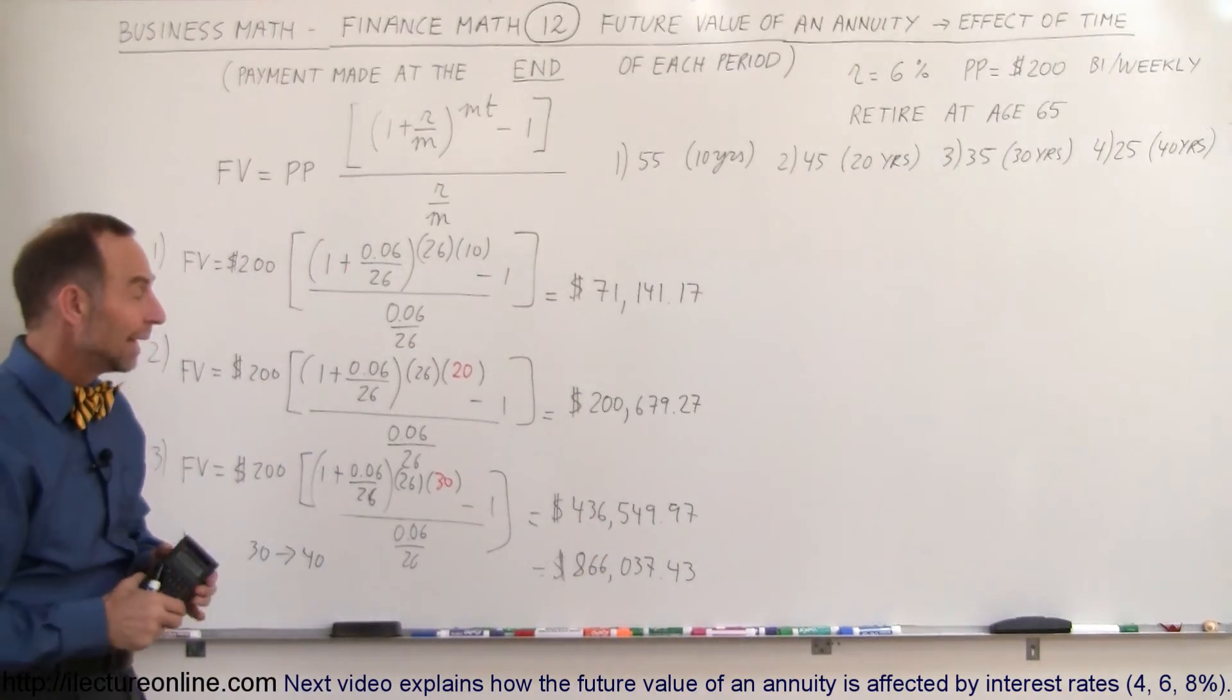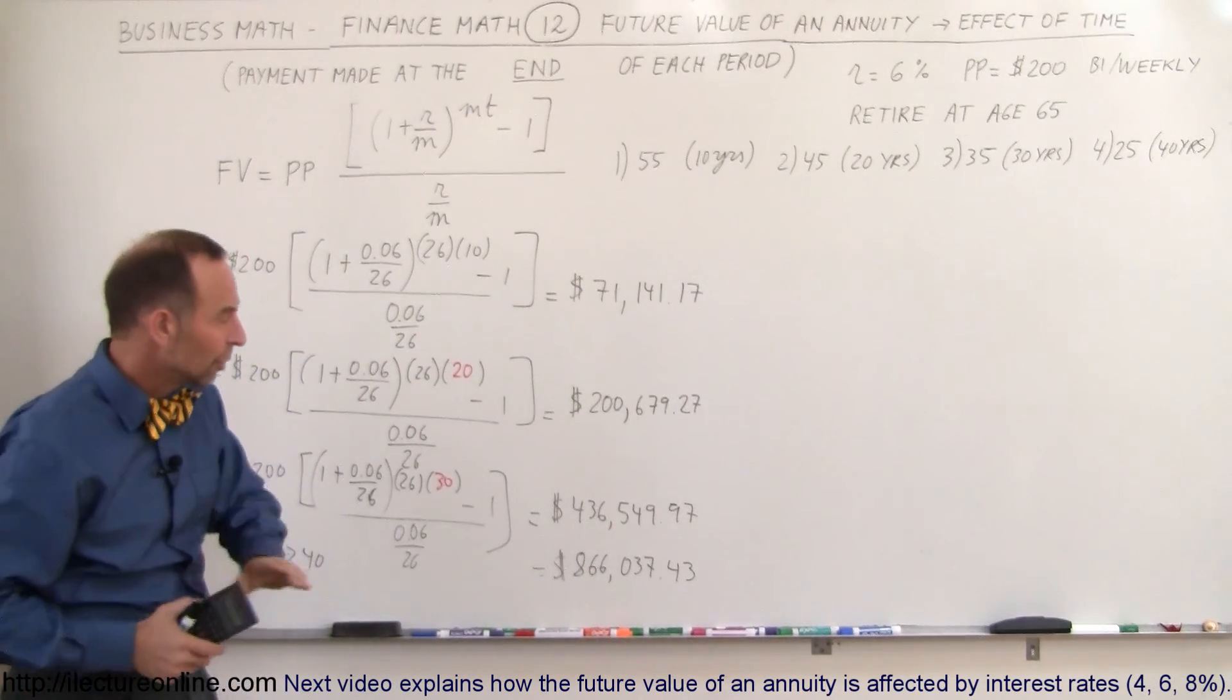Again, more than double. Every time we add another 10 years, it would be more than double the money in the account. If the person waited till they're 55 to begin saving $200 a week, only $71,000. Start at age 45 with 20 years to go, $200,000. At age 35 with 30 years to go, almost a half a million dollars. And starting at age 25 with 40 years to go, $866,000 in the account. And just imagine, what if you saved $400 instead of $200 a week? You would have well over a million dollars.